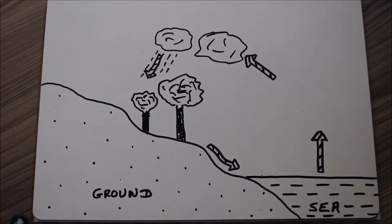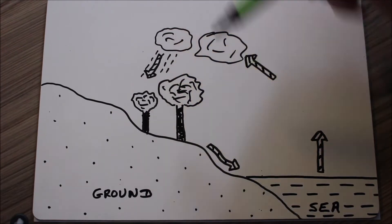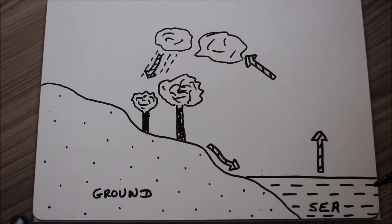Now all the water cycle shows us is what water is doing in different places within our world and within our atmosphere. Here is the hydrological cycle and let's start with the basics. These are supposed to be trees, these are supposed to be clouds, here is the ground and here is the sea.